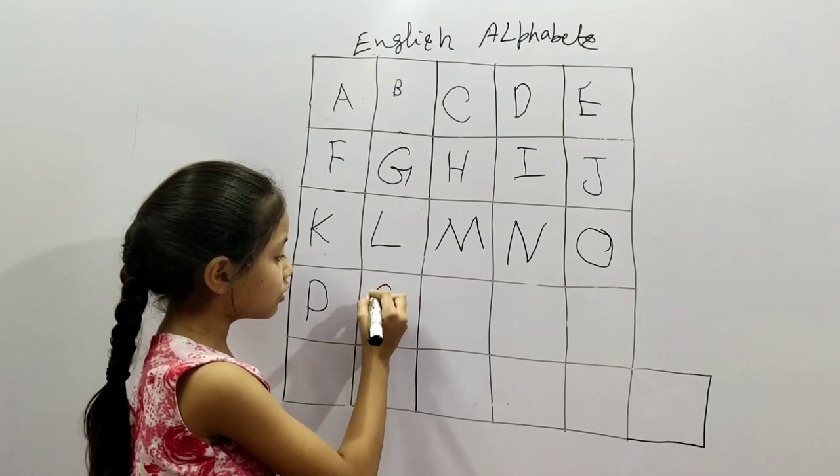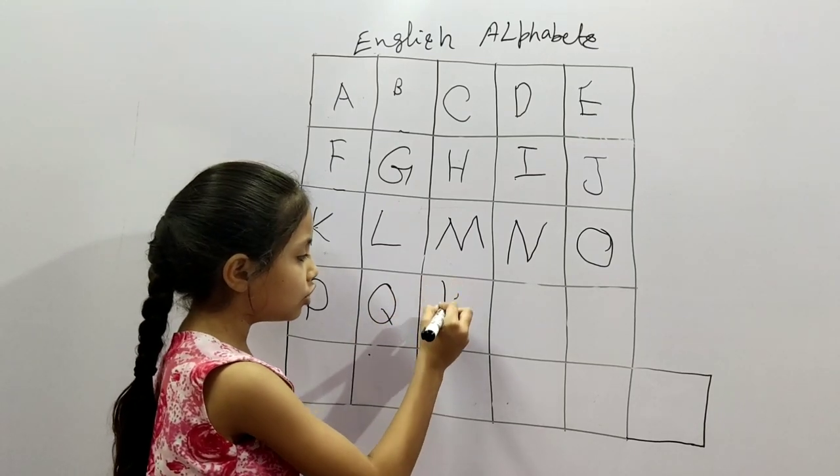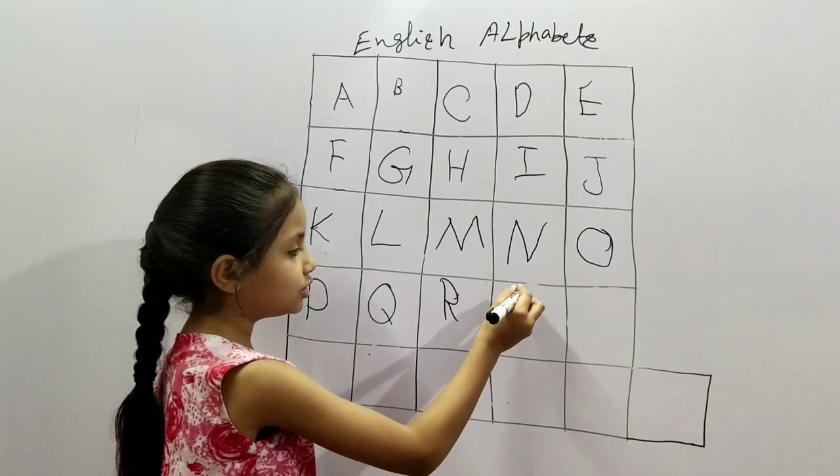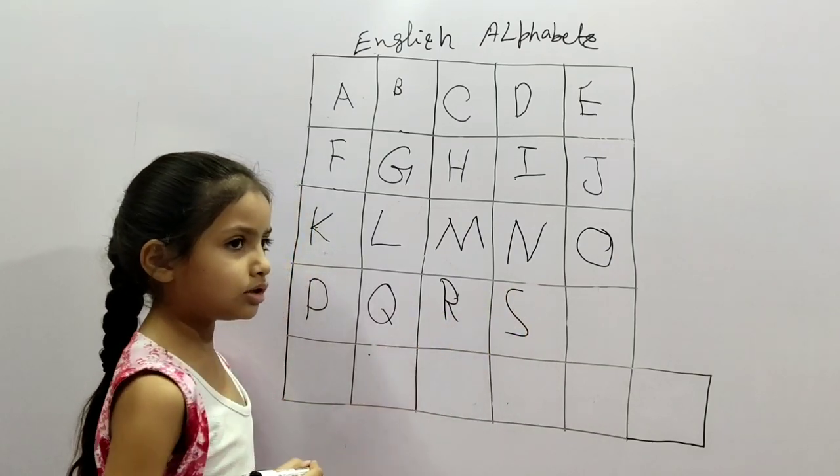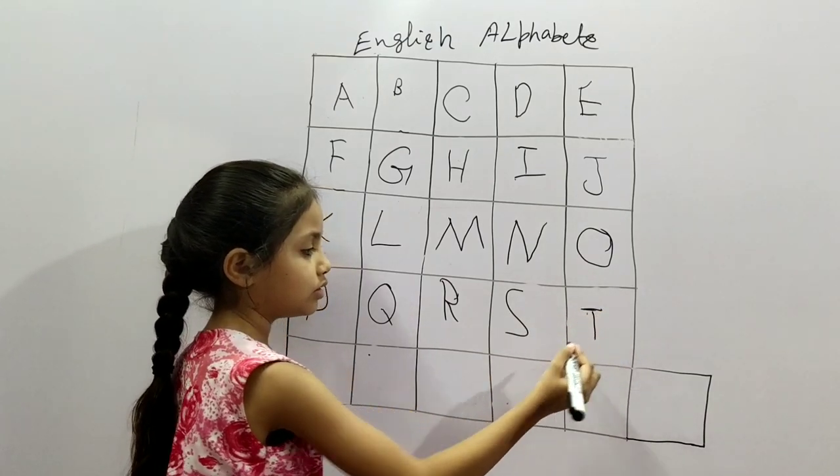Q for queen, R for rose, S for swan, T for telephone.